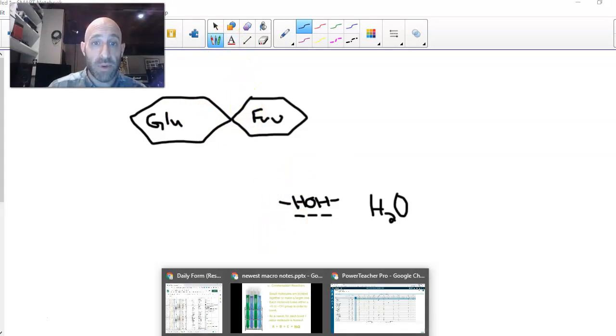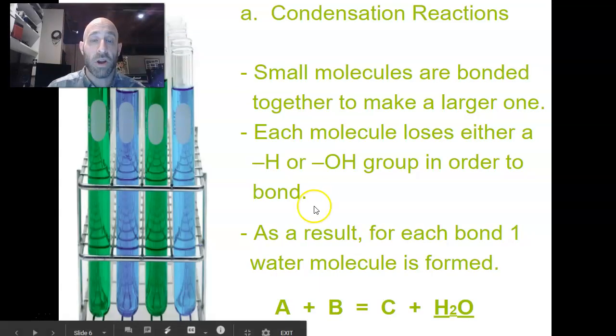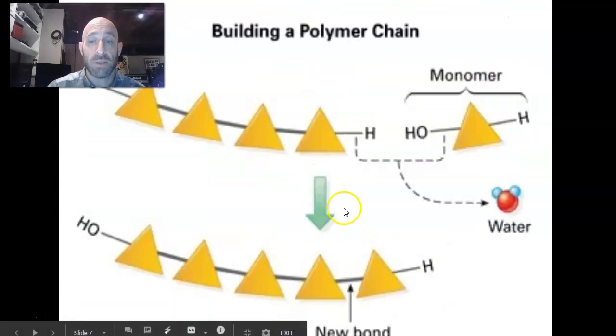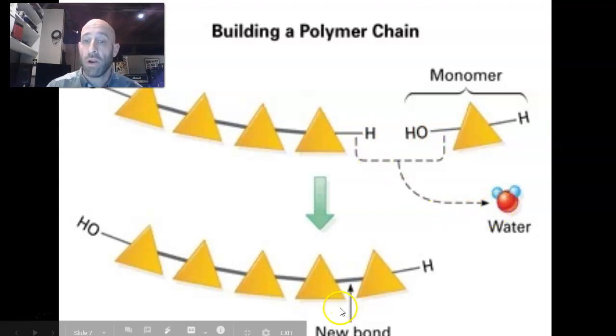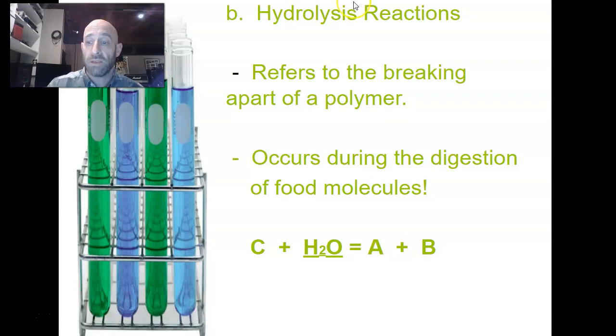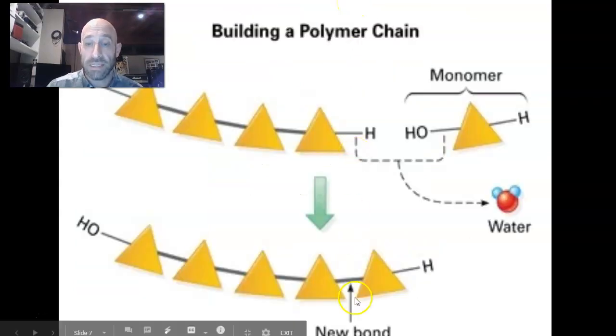The second type of reaction that can occur is if we want to break a bond. So this is just a diagram that explains what I just said. So let's say this is a long chain of sugar molecules, and I want to add another monomer to that. I want to make a longer chain. What would happen is I would remove this hydroxide and this hydrogen, and I would get water, and then I would get this new bond forming, and that is called a condensation reaction.